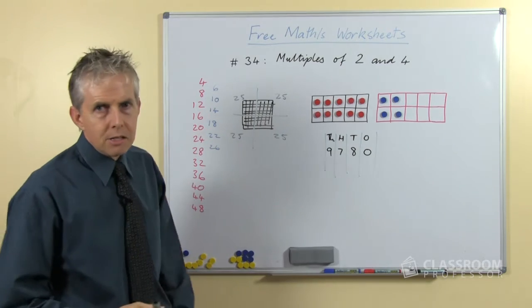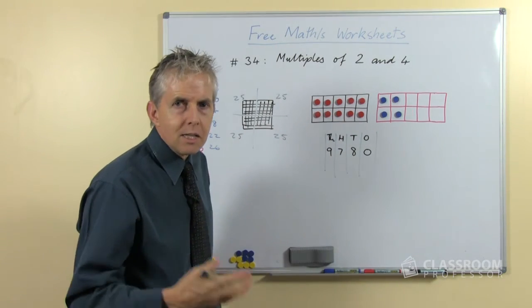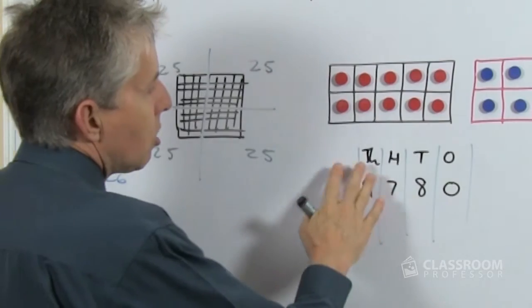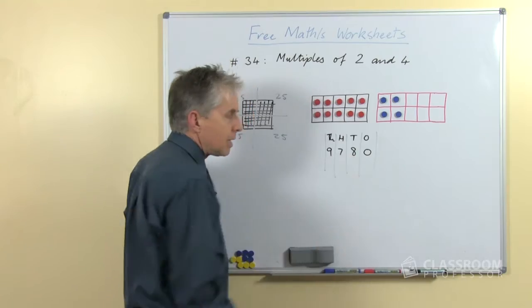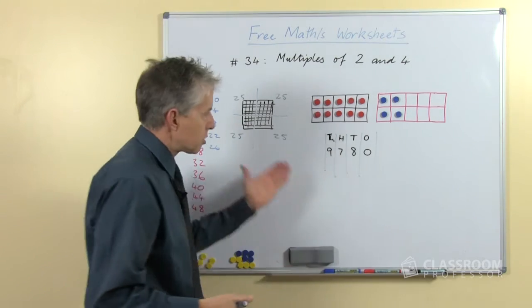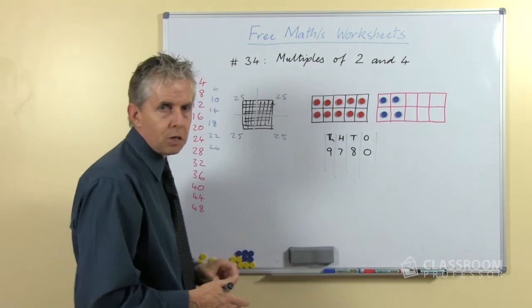9780, that's a nice, that's a fairly easy example. We can see this is a multiple of 4 simply because ignoring the digits that come before the last 2, the 80, the 80 is a multiple of 4, so the entire number is a multiple of 4.